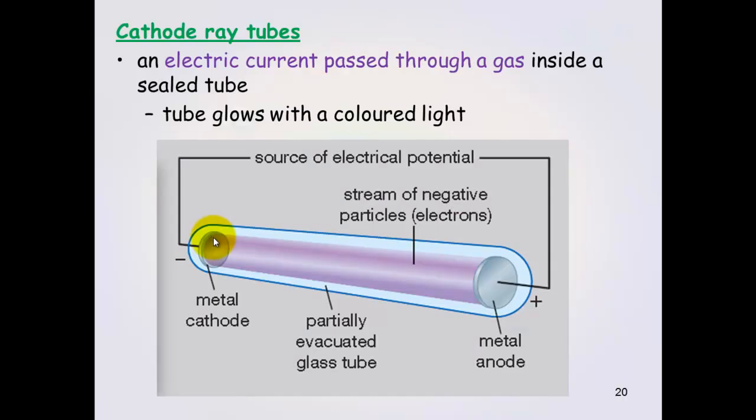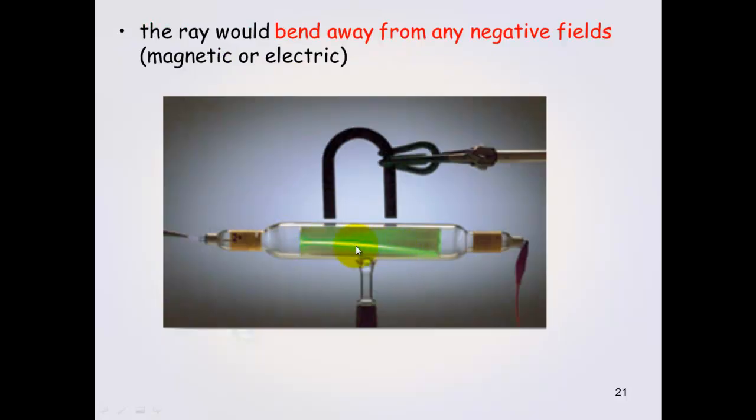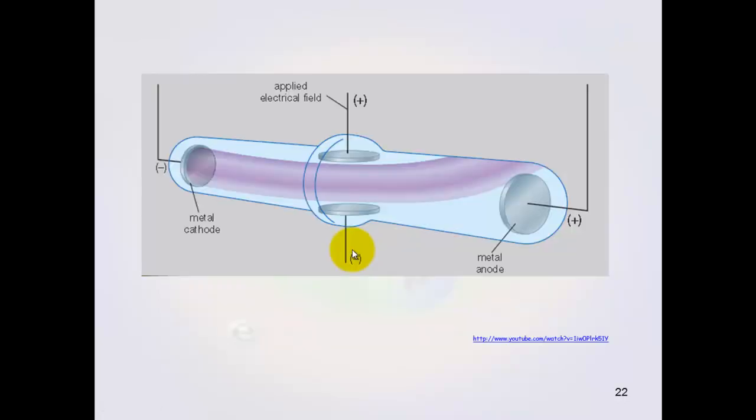What he found is this ray that was created here. You can see this ray of electrons. It would bend away from any negative fields, which were either magnets or electric negative fields. Because it was bending away from negative fields, that showed that this had to be negatively charged. So whatever was running through here had to have a negative charge. And that's just another picture here. You can see that the cathode ray is bending towards the positive in this case and away from the negative, showing that whatever is running through here must have a negative charge.